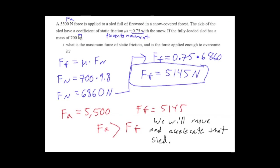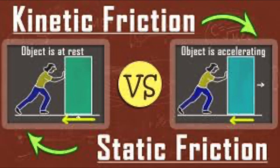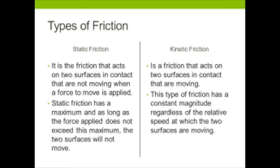Always pay attention to what type of mu value you're given. Mu k is for objects in motion; mu s is for objects that are not in motion. When asked if an object will start moving, use the coefficient of static friction — if applied force overcomes static friction, the object moves. If not, it stays still. Kinetic means motion; static means at rest.